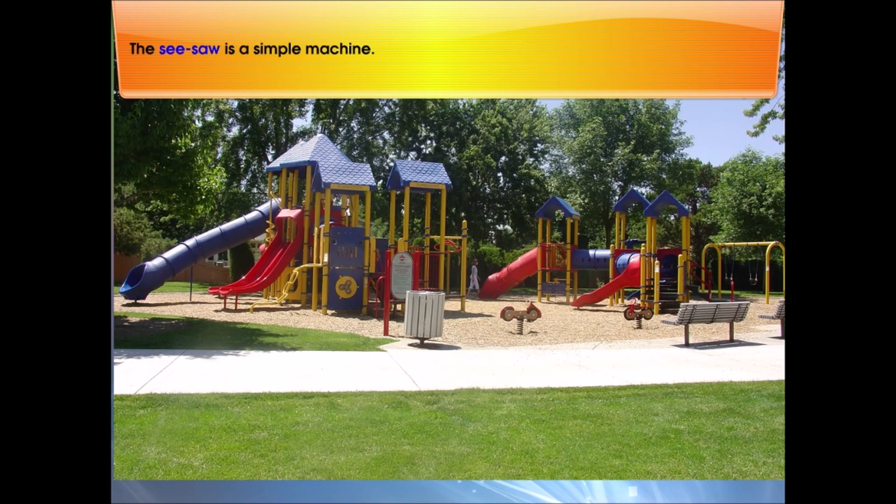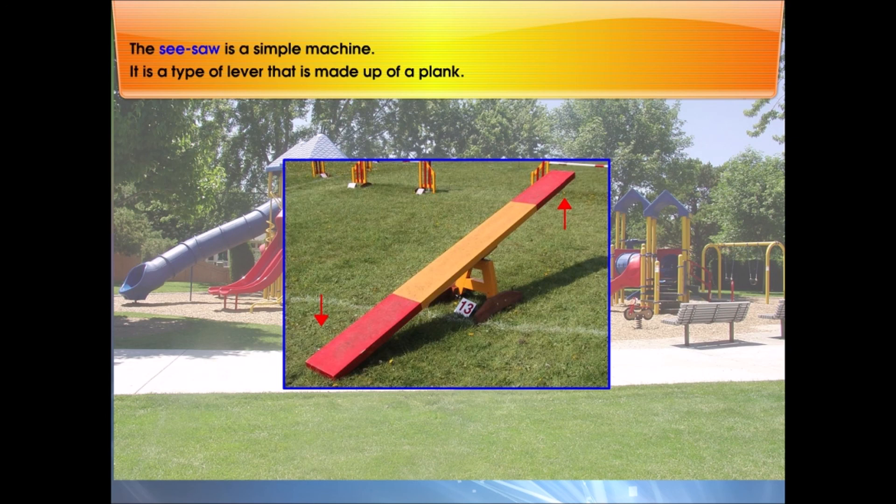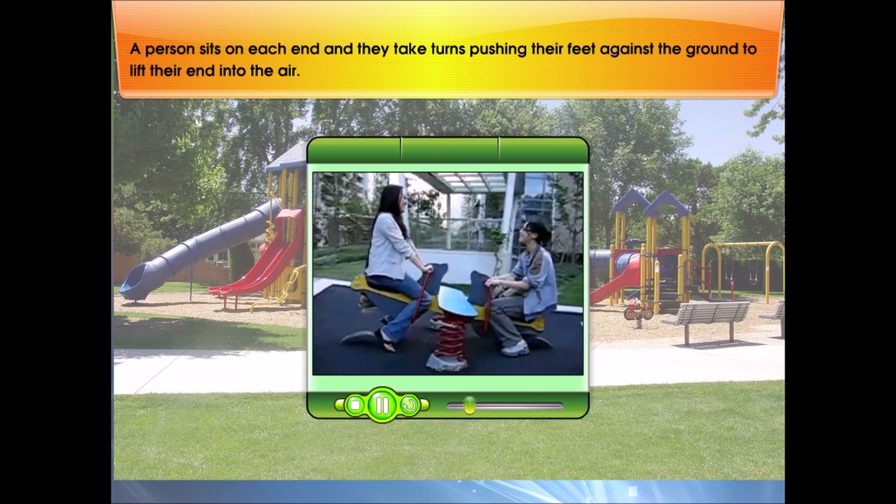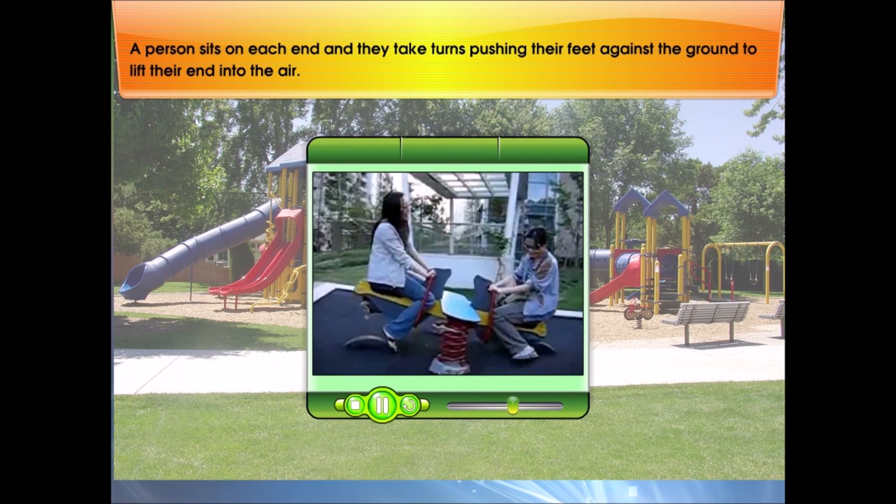The seesaw is a simple machine. It is a type of lever that is made up of a plank that rotates at the center. A person sits on each end, and they take turns pushing their feet against the ground to lift their end into the air.